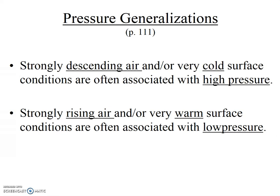Consider pausing the video and re-reading these two pressure generalizations. Based on these concepts, what type of pressure cell do you think is most common at the equator? How about at the poles? You would expect a low pressure system generally at the equator because of the warm surface temperatures and rising air. In contrast, at the poles, we expect high pressure because of the cool conditions and descending air. It's important that you understand these two generalizations as we move forward.